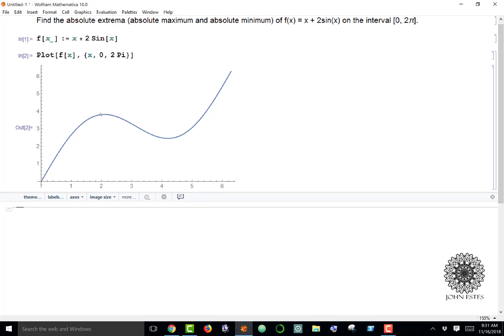To test for absolute min and max, we need to find the critical points, which are where the derivative equals 0, and then we'll test those values and the endpoints. The critical points are going to be this little hill and this little valley here.